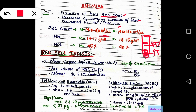Then we come to mean cell hemoglobin or MCH. It denotes the average hemoglobin content per cell. Therefore, MCH equals total hemoglobin content divided by total RBC count, which is around 27 to 33 picograms in a normal individual. The significance of MCH is that MCH in the normal range of 27 to 33 picograms is called normochromic, while MCH below 27 picograms is called hypochromic.